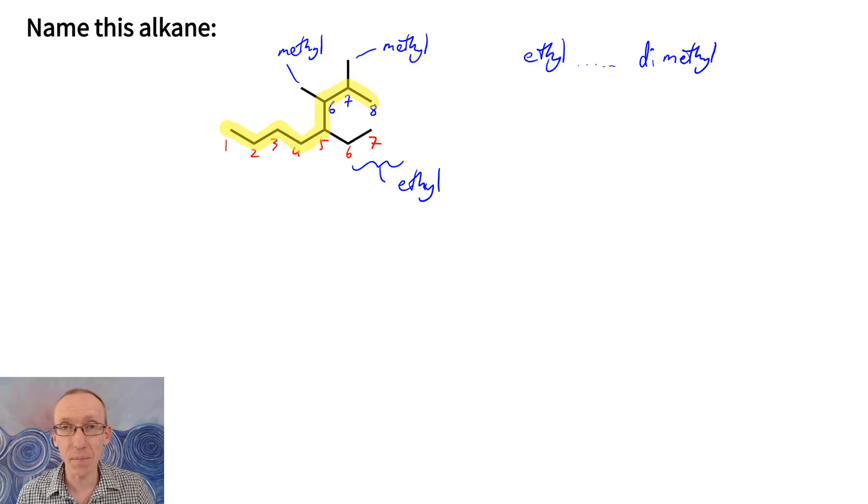To do so we need to name this chain or number this chain so that we get to the first substituent as quickly as possible. So what I'm going to do is I'm just going to scratch out these numbers here and we're going to number the chain again so that we get to the first substituent as quickly as possible. Now with complex molecules you might want to have two goes of this and just go for the one that gets you to the desired result.